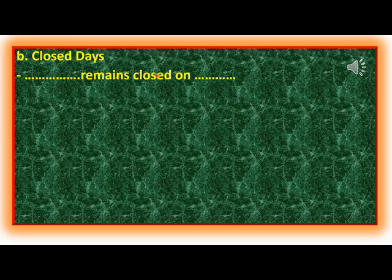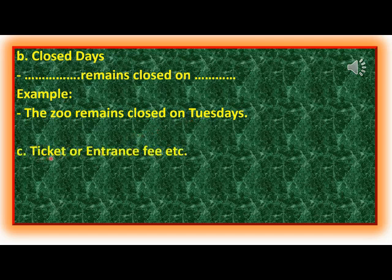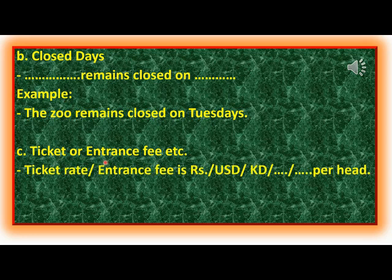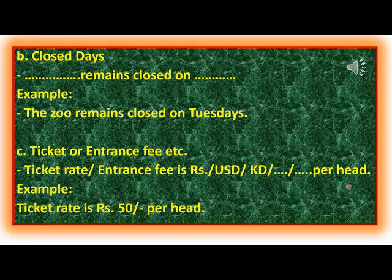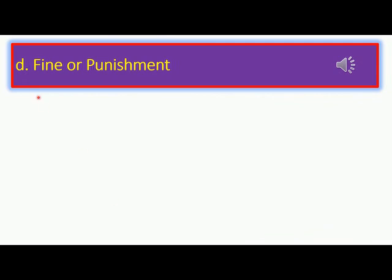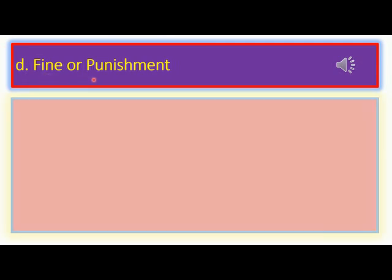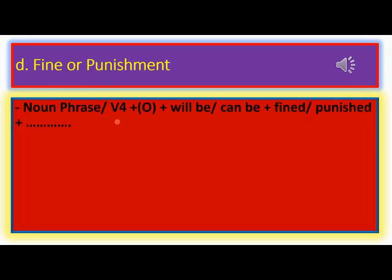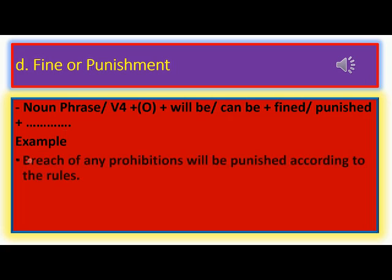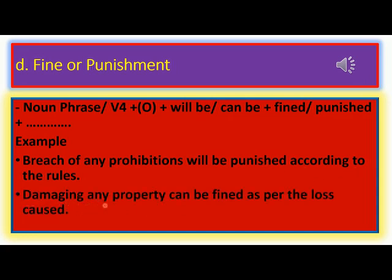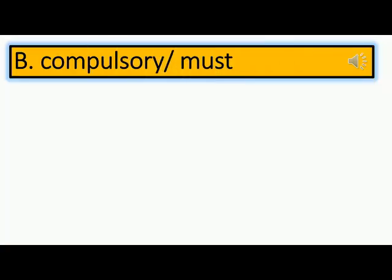Sub-type (c) — ticket rate or entrance fee. Structure: 'Ticket rate is [currency] [amount] per head.' Example: 'Ticket rate is rupees 50 per head.' Sub-type (d) — fine or punishment. Structure: '[Noun phrase / V4 + object] will be / can be fined or punished [details].' Example: 'Breach of any prohibitions will be punished according to the rules.' Another example: 'Damaging any property can be fined as per the loss caused.'